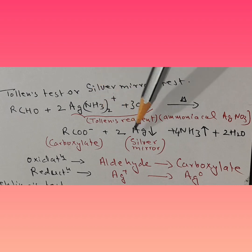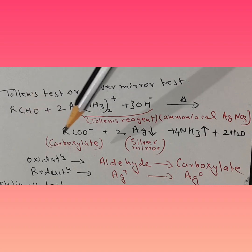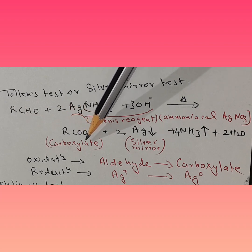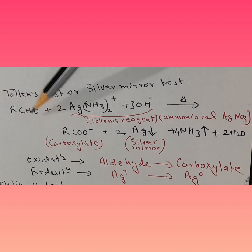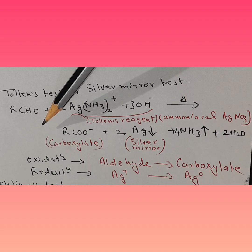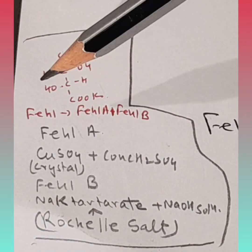The sugar has reduced silver, and what happens to itself — obviously it gets oxidized, and the aldehyde group gets oxidized to carboxylate. This confirms the sugar is a reducing sugar. But for that, the aldehyde group has to be present. So whether the aldehyde group is present or not decides whether it is reducing or non-reducing sugar respectively. Now let's understand Fehling's test.